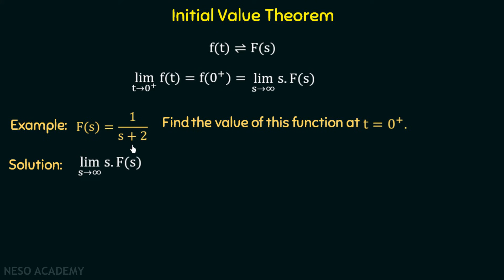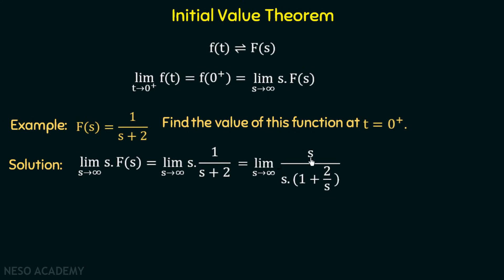F(s) equal to 1 over s plus 2, so we have limit s tending to infinity of s times 1 over s plus 2. Since s is tending to infinity, we take s common in the denominator: limit s tending to infinity of s over s times (1 plus 2 over s). The s terms cancel, and as s tends to infinity, 2 over s tends to 0, giving a limit equal to 1. So the initial value of this function is 1, calculated using the initial value theorem.